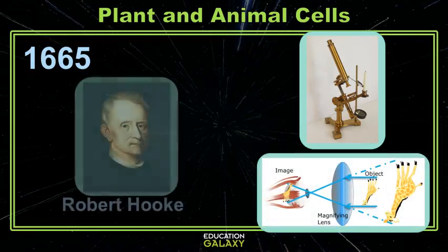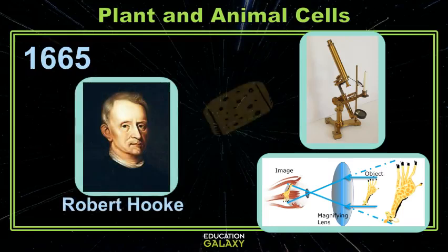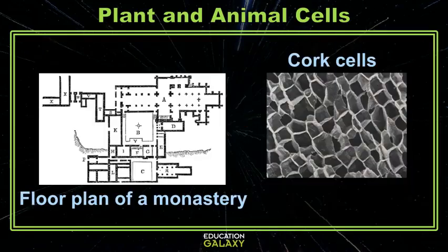One guy, named Robert Hooke, took a small piece of cork and looked at it underneath a microscope and was amazed to see that the cork was made up of these tiny rooms — like the rooms you might see in a monastery where monks live, called cellular. He decided to call these little rooms cells, and the name stuck.